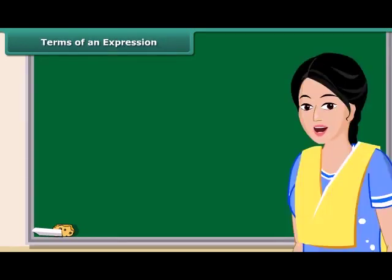Now we will discuss what terms of an expression and their factors are. Consider the expression 9X plus 4. In forming this expression, we first formed 9X separately as a product of 9 and X and then added 4 to it. So you have seen these expressions have parts which are formed separately and then added. We call these parts as terms.